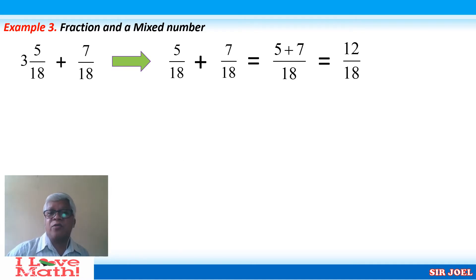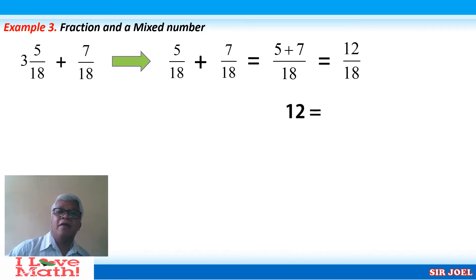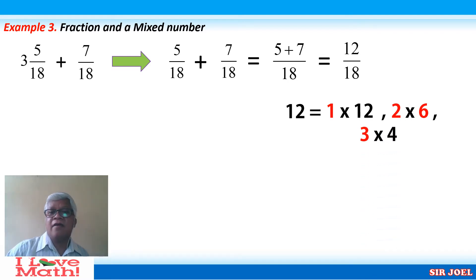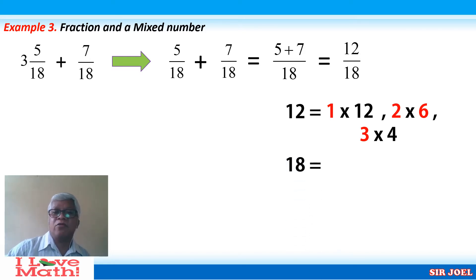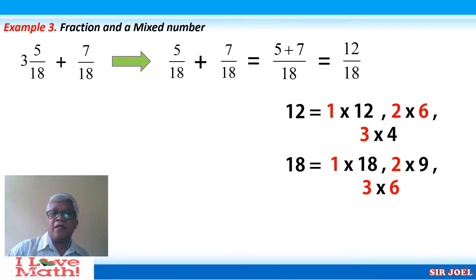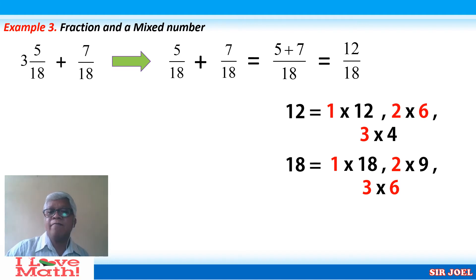Is 12 over 18 written in lowest term? The factors of 12 are 1, 2, 3, 4, 6, and 12. The factors of 18 are 1, 2, 3, 6, 9, and 18. The common factors of 12 and 18 are 1, 2, 3, and 6. Among those, which is the greatest common factor? It is 6.